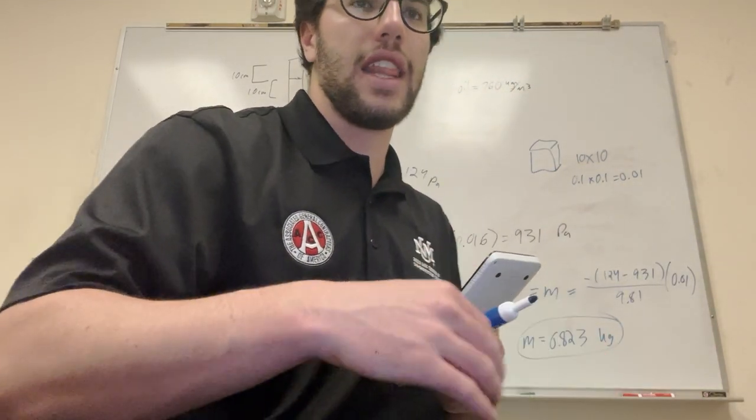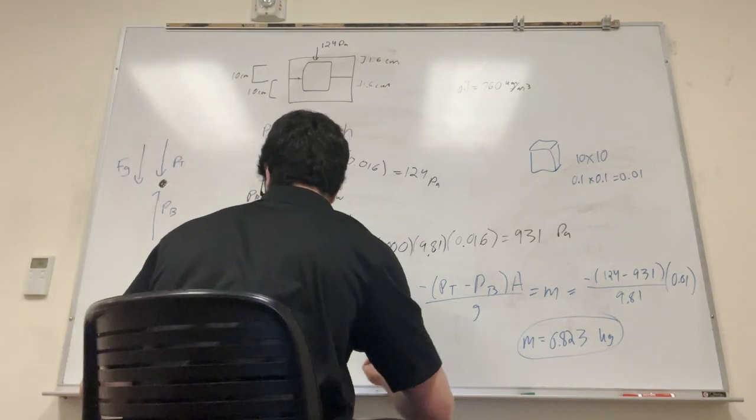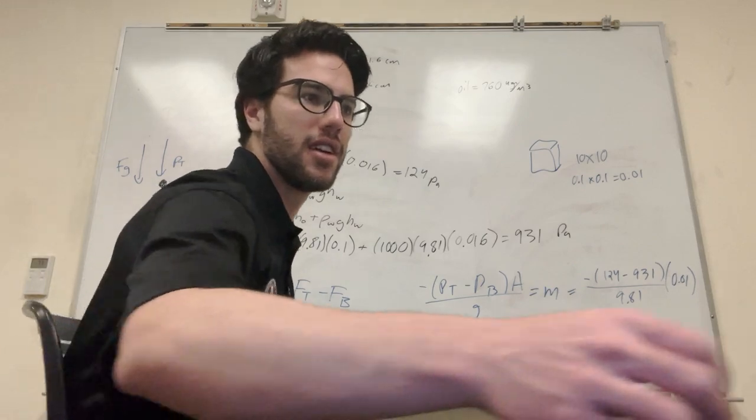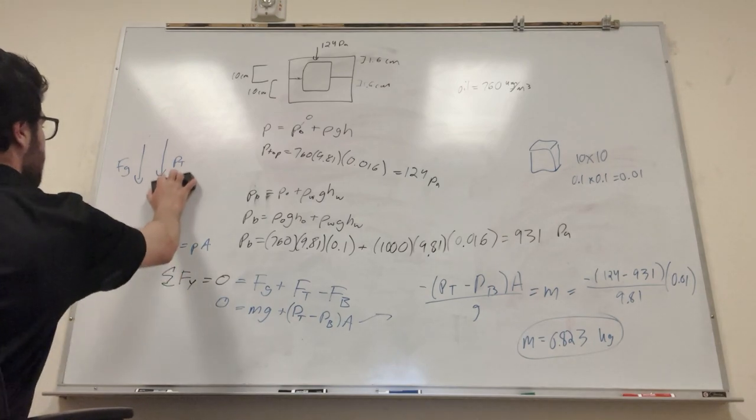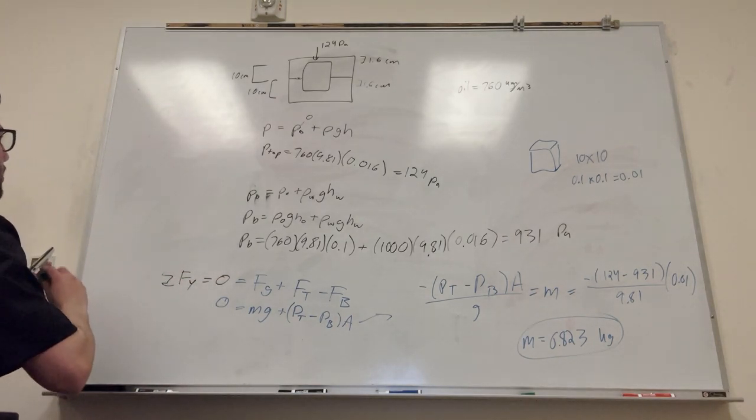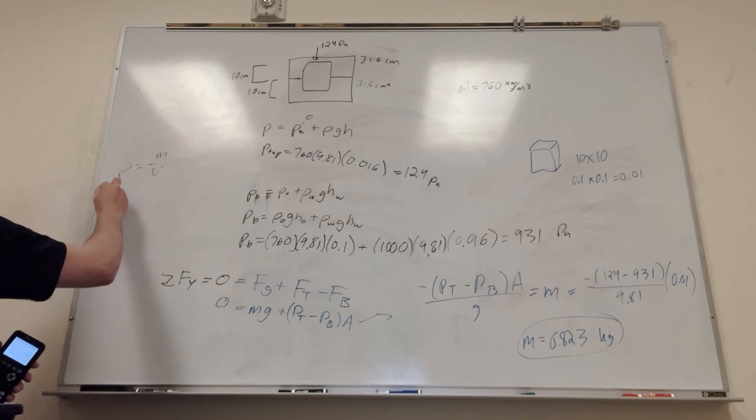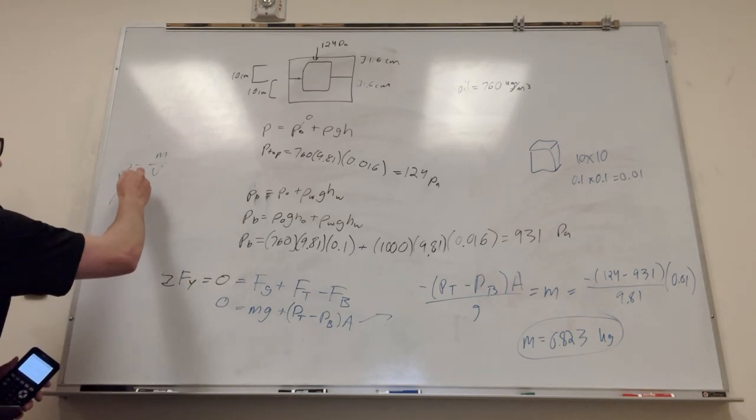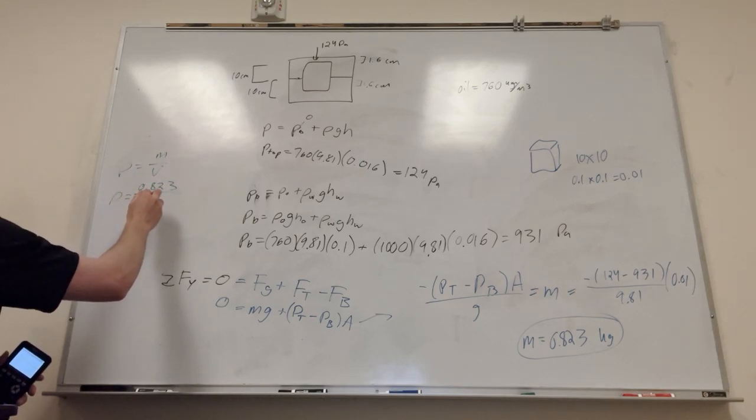And then part D is asking us for the density, which is the easiest part. I'll isolate this. Okay, so density is equal to mass over volume. Okay, so density is what we're trying to find. We know it's mass, 0.823. And then volume, that's gonna be equal to the side length cubed, so 0.1 to the third.